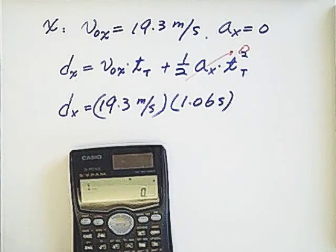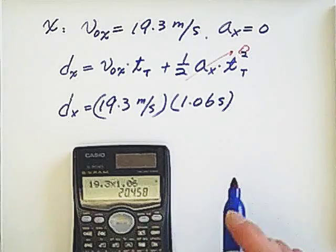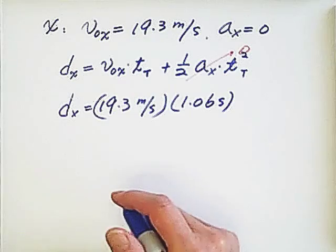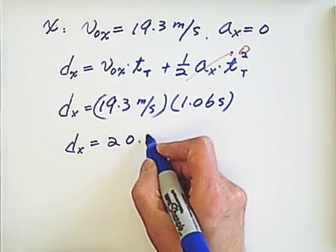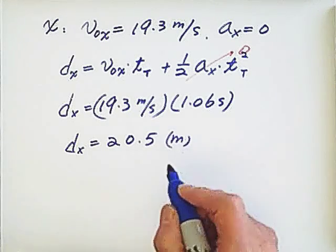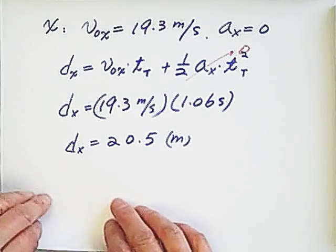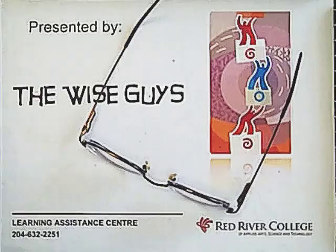19.3 multiplied by 1.06 equals 20.5, so dₓ equals 20.5 meters. This is the ball's range. This is presented by Wiseguys — thank you.